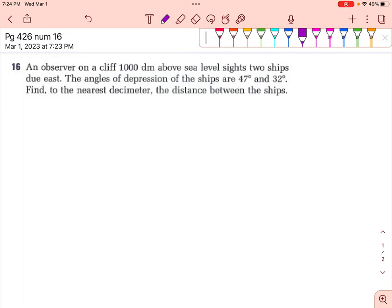Okay, so an observer on a cliff, a hundred, we're just going to say miles because I feel like we're comfortable with miles, a thousand miles above sea level, cites two ships due east, we're going to say west, west, no east, you're right, I'm going crazy.